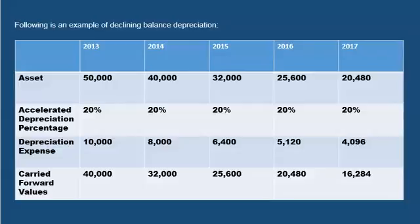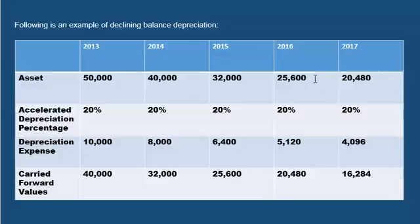Here is an example of declining balance depreciation. In 2013, the asset value is $50,000, the rate is 20%, and the depreciation expense is $10,000, leaving a carried-forward value of $40,000. In 2014, the rate is 20% and the depreciation expense is $8,000. In 2015, the carried-forward value is $32,000, the rate is 20%, and the depreciation expense is $6,400. The value carried forward is $25,600. In 2016, the rate is 20%.